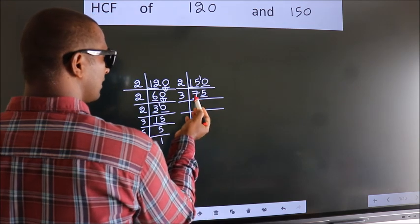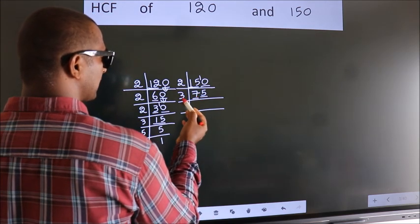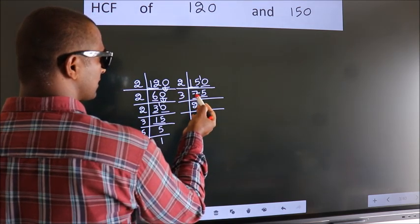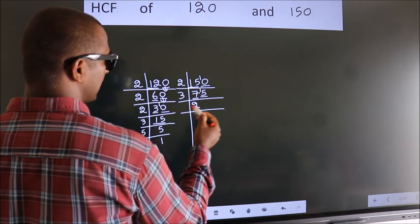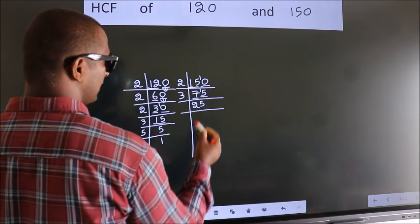First number 7, a number close to 7 in 3 table is 3, 2, 6. 7 minus 6, 1, 1 carried forward 15. When do we get 15 in 3 table? 3, 5 is 15.